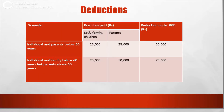What amount of premiums will we deduct? We will pay premiums for self, spouse, and children. We can deduct a total of ₹25,000.